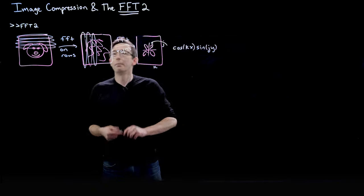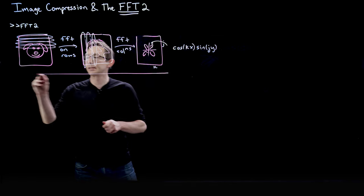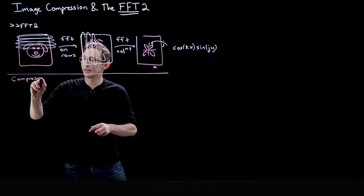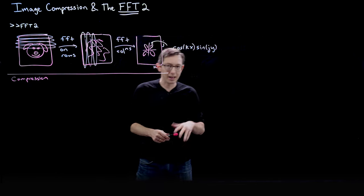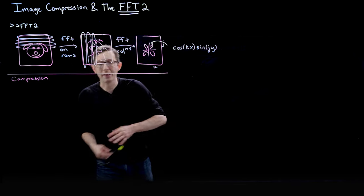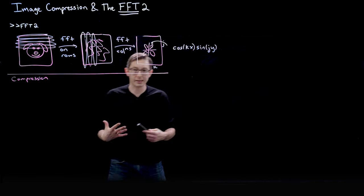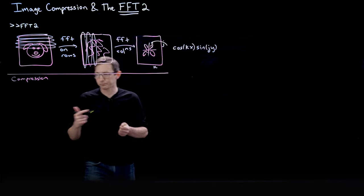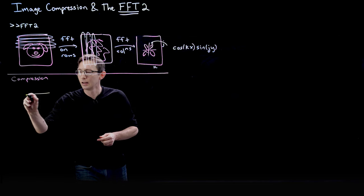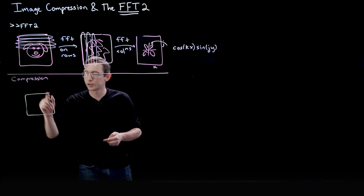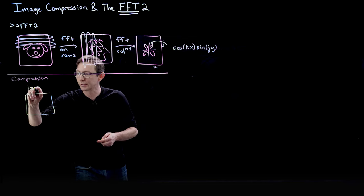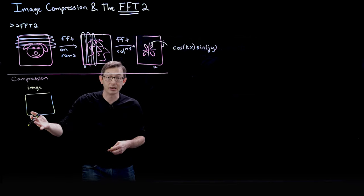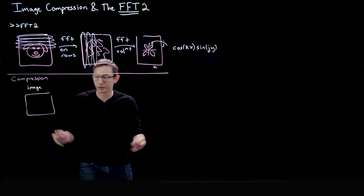But now I want to show you how you would use this for compression. This is really cool. I'm going to show you mathematically how you use this for compression, and then we're going to code this up in the next few lectures in Python and in MATLAB. The basic idea is that when you have your image in image space, and maybe this is a megapixel image, it's got one million pieces of information.